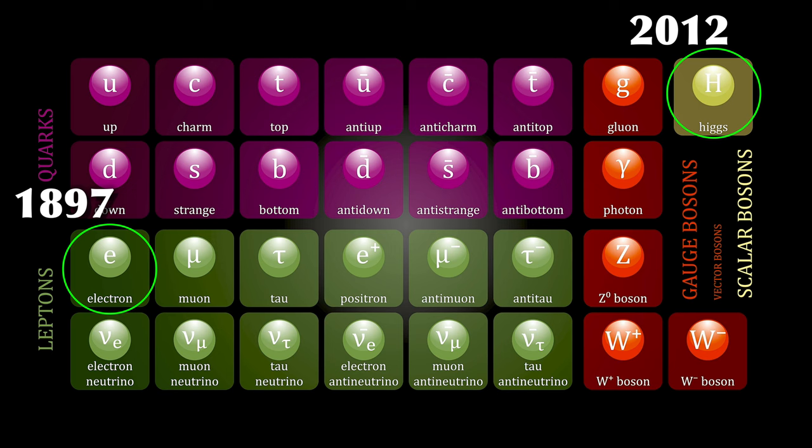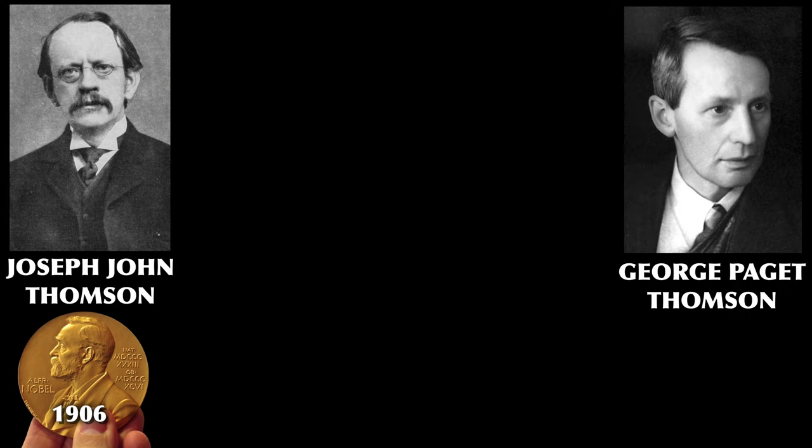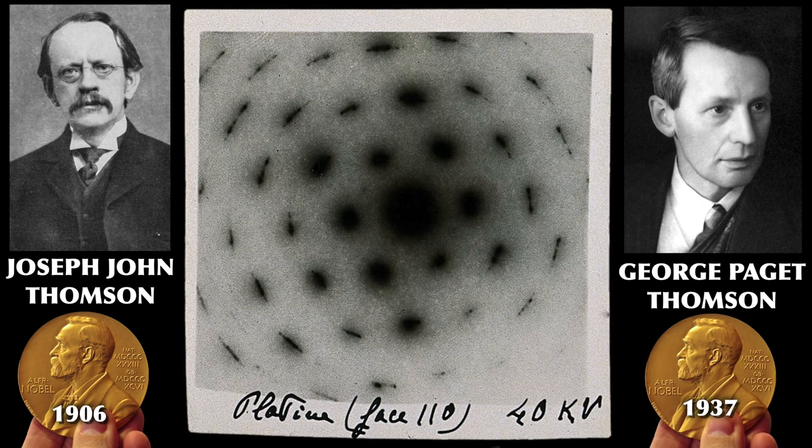And it all started in a cathode ray tube in the 19th century. Just one last thing, because the universe sometimes has a really interesting sense of humor. J.J. Thomson won the Nobel Prize in 1906 for showing the particle nature of electrons. Turns out he had a son called George Paget Thomson, who also became a physicist and who also won a Nobel Prize — in 1937 — awarded for showing the wave nature of the electron. Because sometimes in physics, the opposite of a truth is another deep truth.